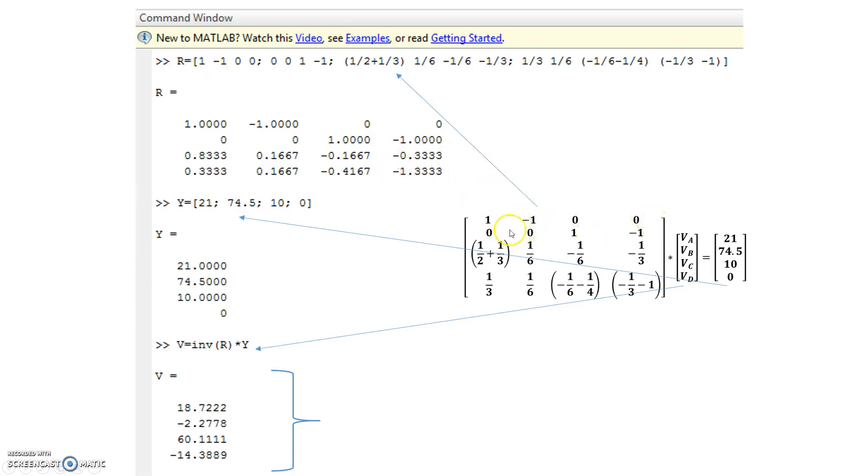Minus 1, 0, 0. In order to add the second row, I add a semicolon. And 1 half plus 1 third, 1 sixth, negative 1 sixth, negative 1 third, 1 third, semicolon to add the next row, 1 third, 1 sixth, negative 1 sixth, minus 1 fourth. And finally, negative 1 third, minus 1.